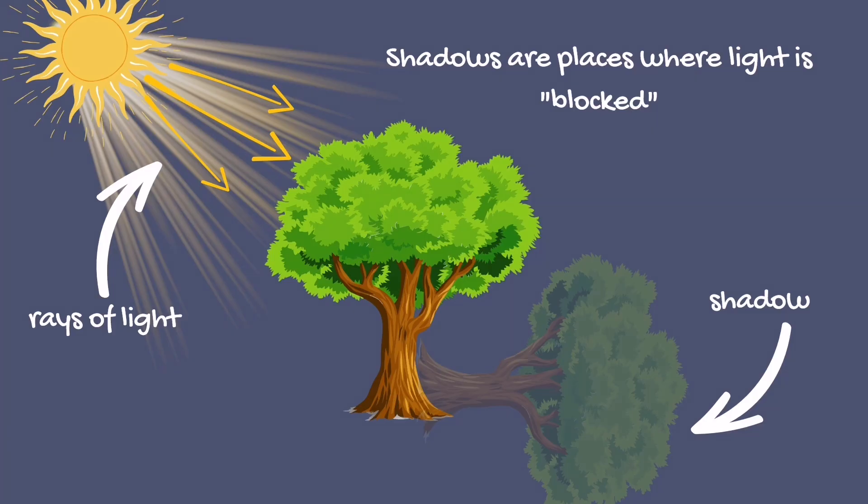When there is no light, there is no shadow. As light travels in a straight line and is then blocked by an object, there is a formation of shadow. The object does not let the light pass through it. Shadow is formed when light traveling from a source is blocked. In our illustration, the tree blocked the rays of the sun, which caused the formation of the shadow.